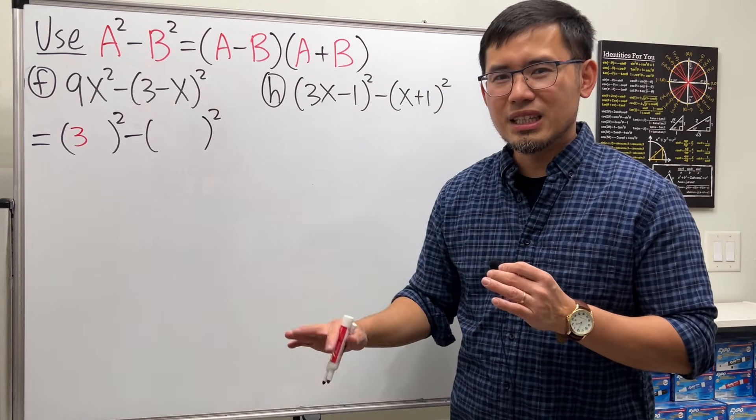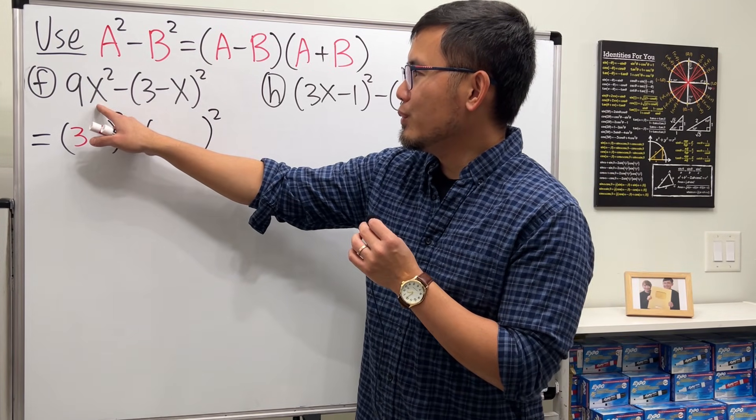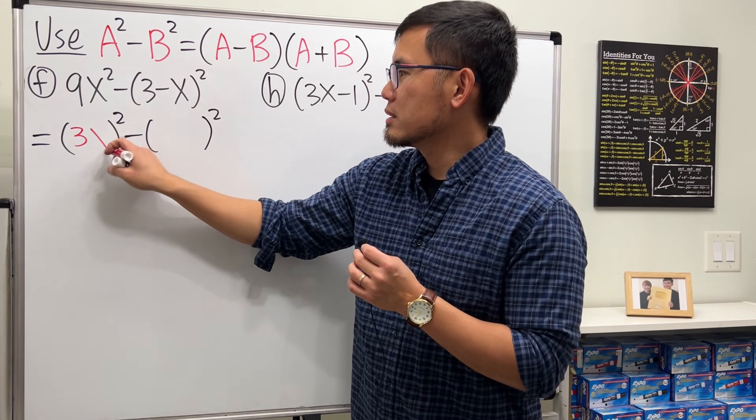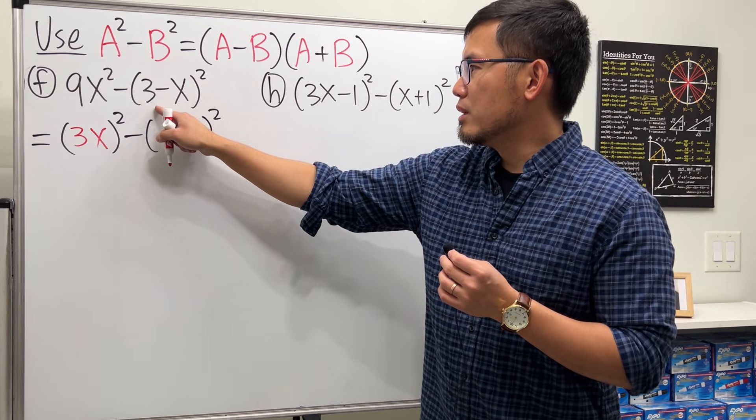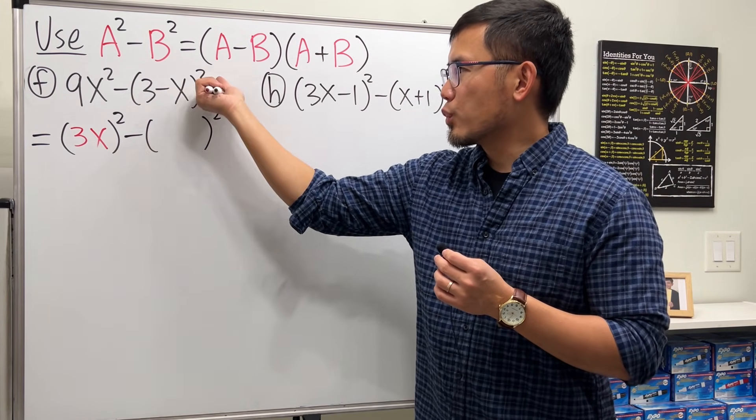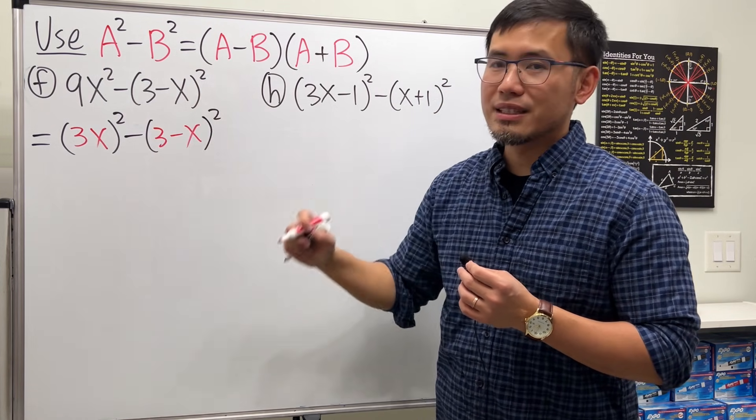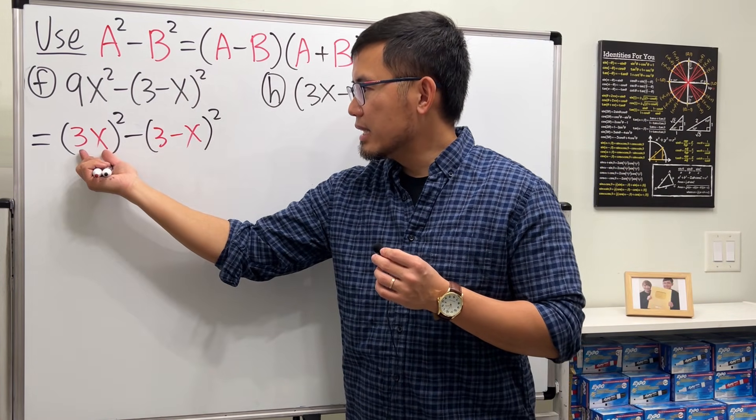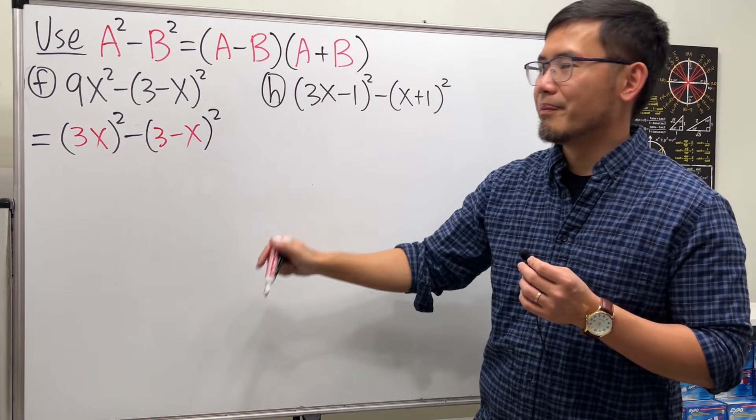Next we want to end up with x², just put on x because x squared. And then this right here, it's already in the something square form already, so this is 3 minus x like that. Now we are looking at A² minus B², so we can just use the formula. Have a look.